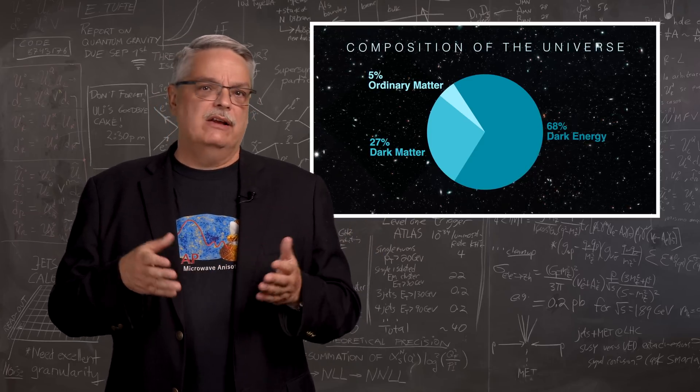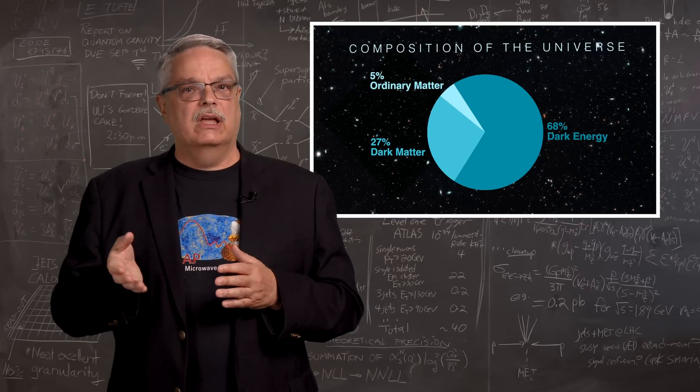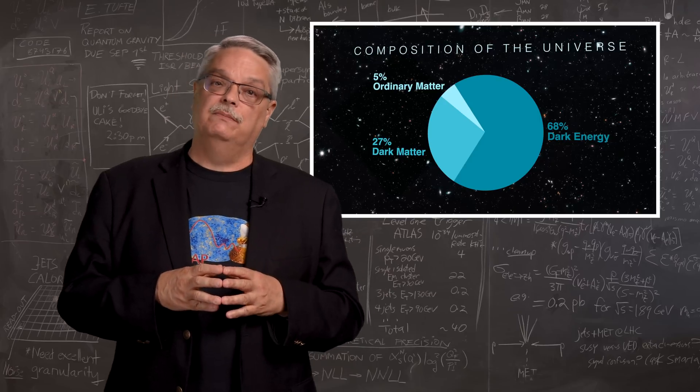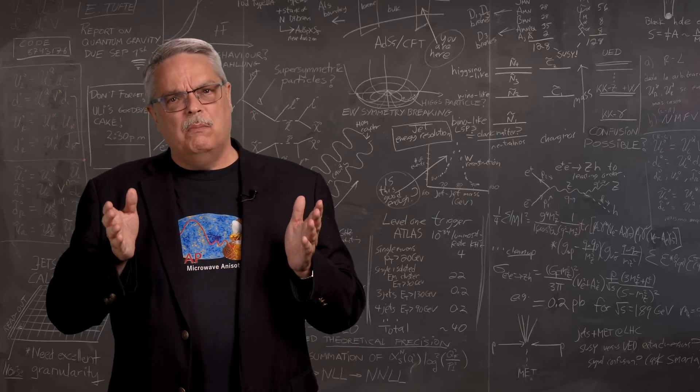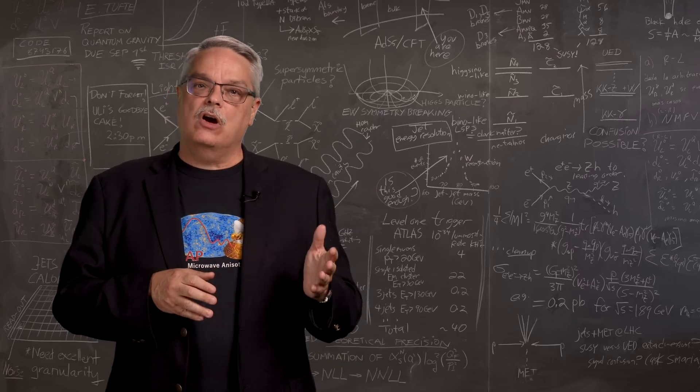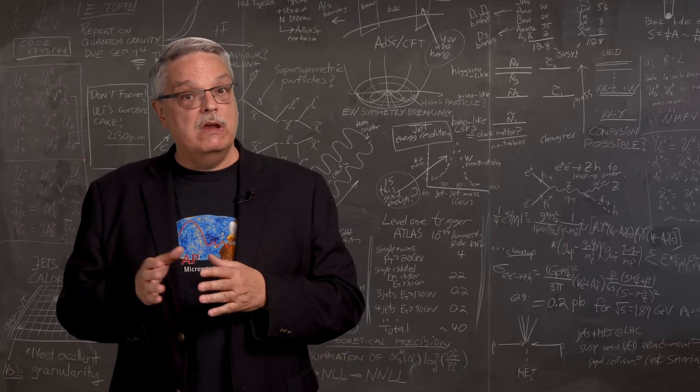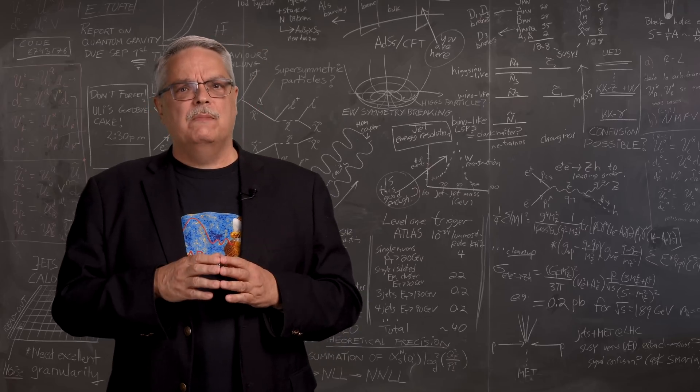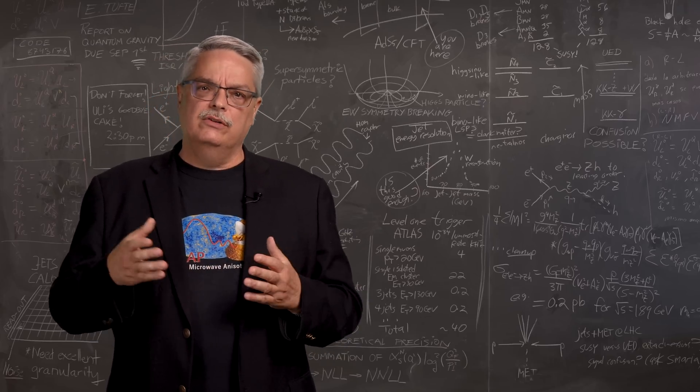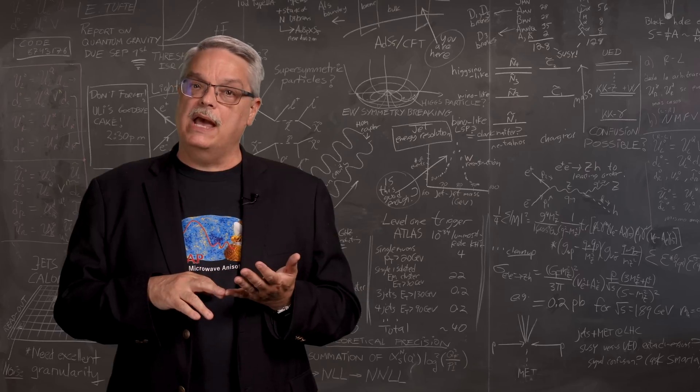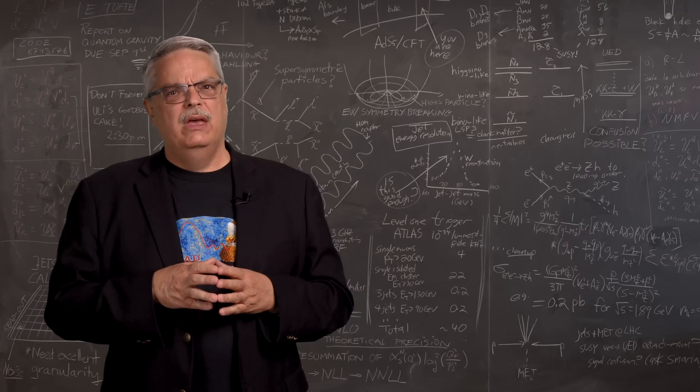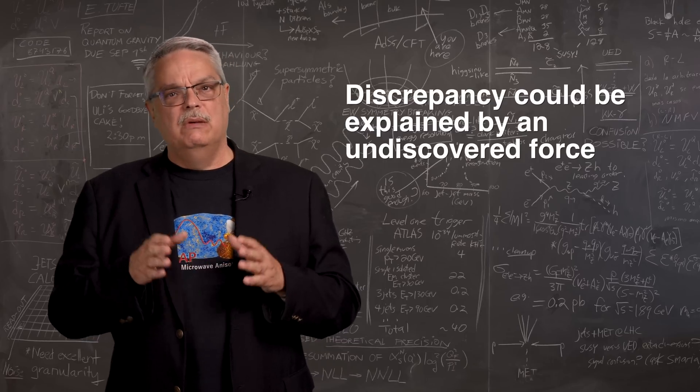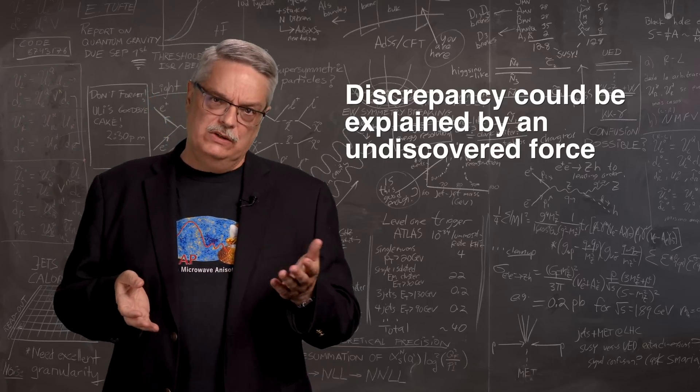Dark matter is a form of matter that experiences gravity, but it doesn't give off any light and dark energy is a type of gravity that repels rather than attracts. So one possible explanation is that dark matter experiences interactions with ordinary matter beyond the known gravitational interaction. We know that dark matter doesn't experience any of the other known forces, specifically electromagnetism or the strong or weak nuclear forces. But perhaps there is an unknown force that is weak enough that we haven't discovered it, but it connects dark matter and ordinary matter.